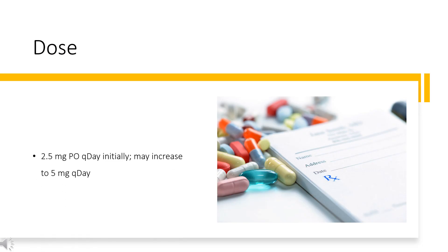Dose. Edema: 2.5 mg PO once daily initially, may increase to 5 mg once daily. Hypertension: 1.25 mg PO once every morning initially, may increase at 4-week intervals up to 5 mg every morning.